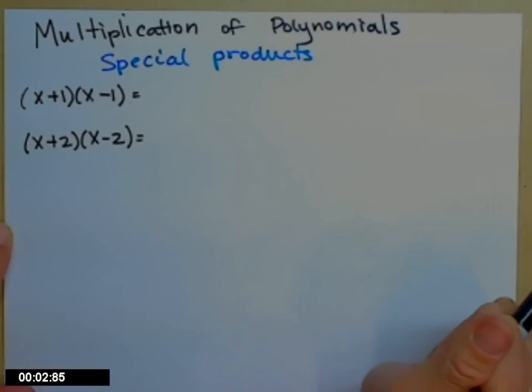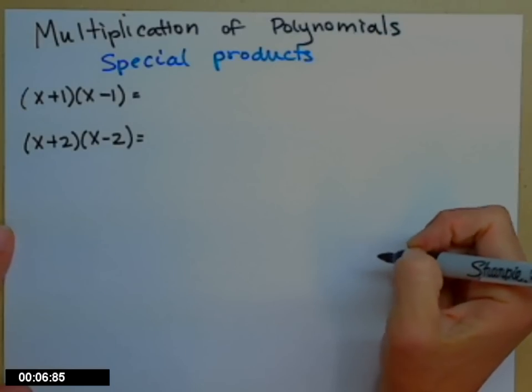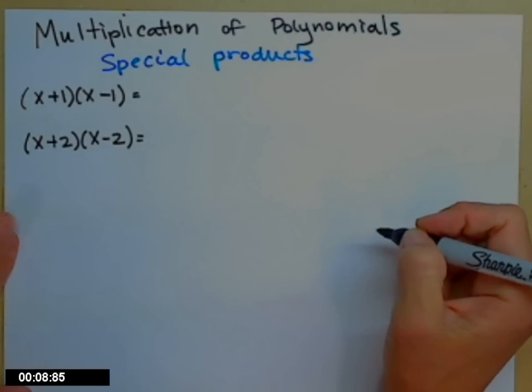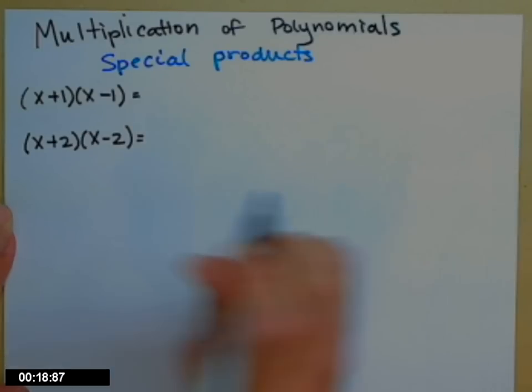There are a couple of special products that come up when we're multiplying polynomials that we're more interested in later. For now, it's just saving us a couple of seconds when we have to multiply. This is really learning the pattern so that we know it later when we need to factor. But let's go ahead and learn it because it's fun, right?